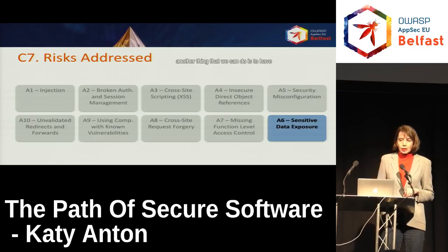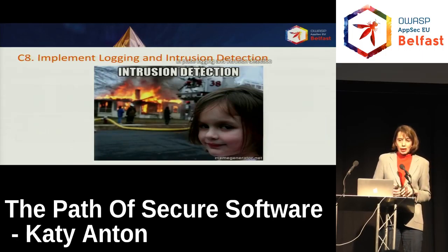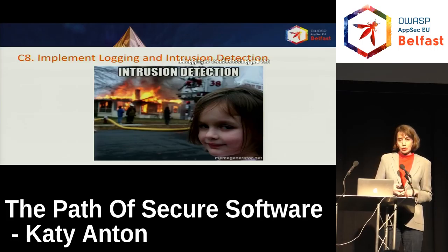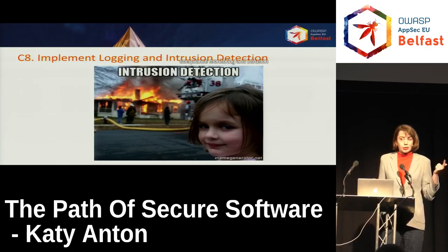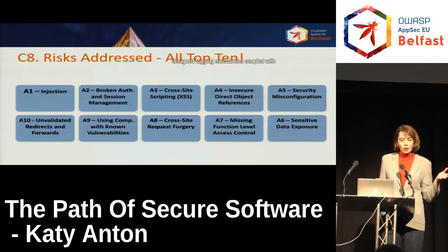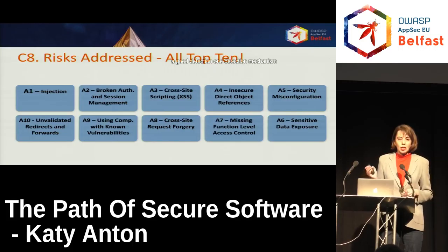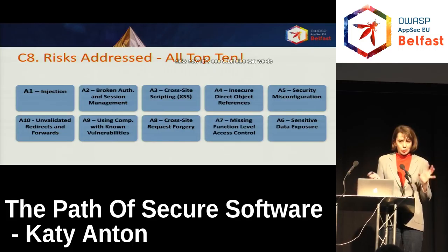Another thing we can do is have logging and intrusion detection in place. Logging should not be used for debugging or troubleshooting only — it can also be used for application monitoring, compliance monitoring, and intrusion detection. Having a well-designed logging mechanism coupled with a good detection mechanism can help prevent all the OWASP Top 10 risks.